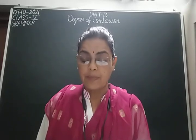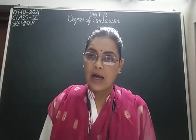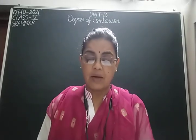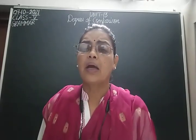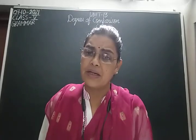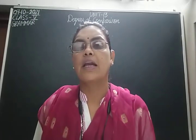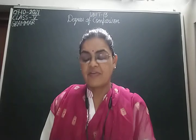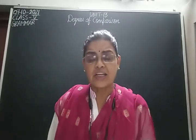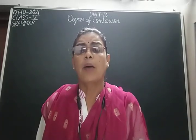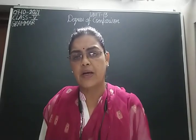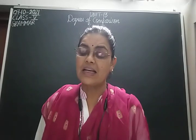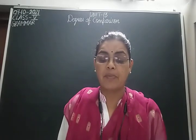Rule C: when the words end in Y preceded by a consonant, Y is changed into I before adding ER and EST. Rule D: when the words end in vowel plus Y, we simply add ER and EST. Rule E: if the word is of one syllable and ends in a single consonant with a vowel before it, then the consonant is doubled before adding ER and EST.